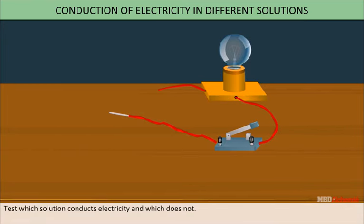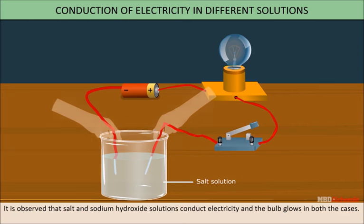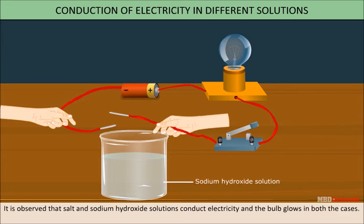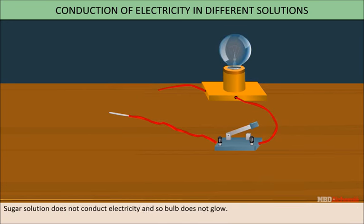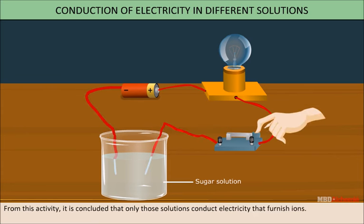Test which solution conducts electricity and which does not. You will observe that salt and sodium hydroxide conduct electricity and the bulb glows in both solutions. Sugar solution does not conduct electricity and the bulb does not glow. From this activity, we conclude that only that solution conducts electricity which furnishes ions on passing current.